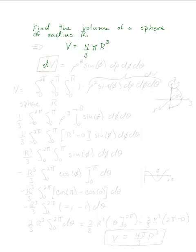The first thing we need to know is that the dV element for spherical coordinates is ρ² sin(φ) dρ dφ dθ in any order you wish.